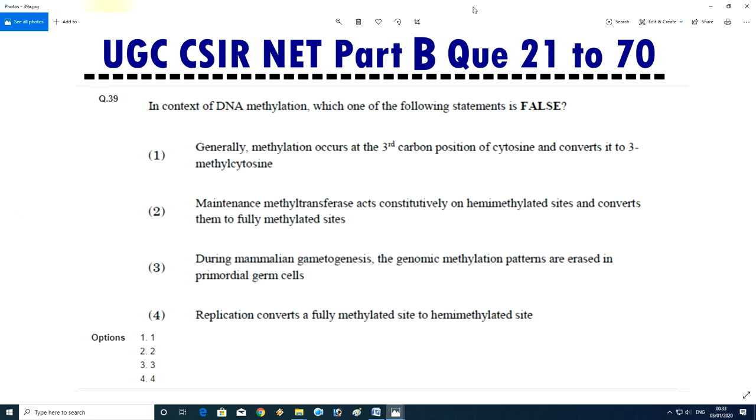Question No.40 - In context of DNA methylation, which one of the following statements is false? Generally, methylation occurs on the third carbon position of cytosine to convert into 3-methylcytosine. Maintenance methyltransferase acts constitutively at hemimethylated site and convert them into fully methylated site. During mammalian gametogenesis, the genomic methylation patterns are erased in primordial germ cell. Replication converts a fully methylated site to hemimethylated site. Answer A, genetic methylation occurs on third carbon position of cytosine to convert into 3-methylcytosine.